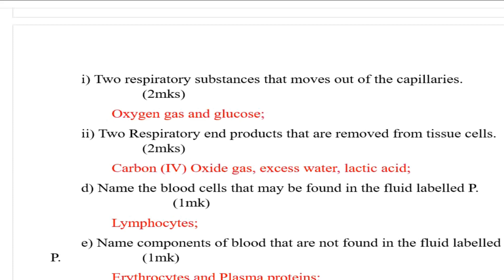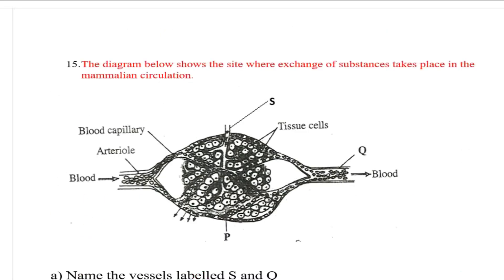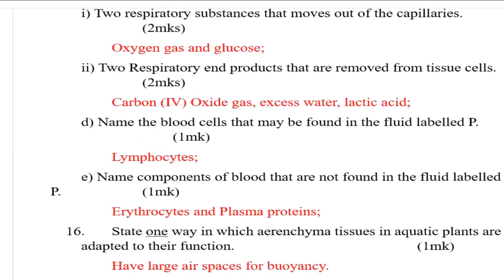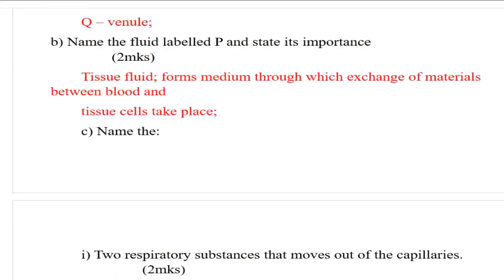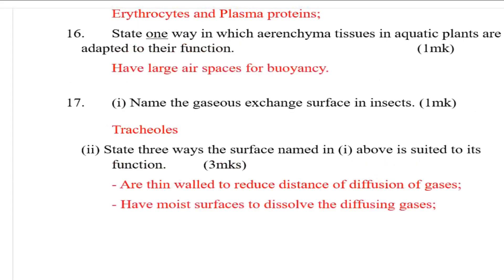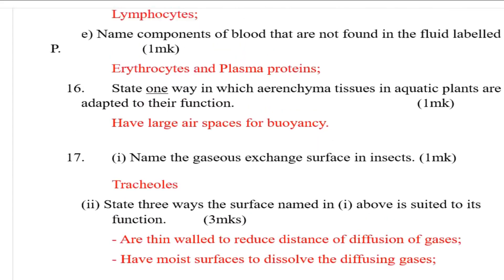Also among the respiratory end products is lactic acid. Name the blood cell that may be found in the fluid labeled P — that is lymphocytes. Name components of blood that are not found in the fluid labeled P. Those are erythrocytes and plasma proteins.